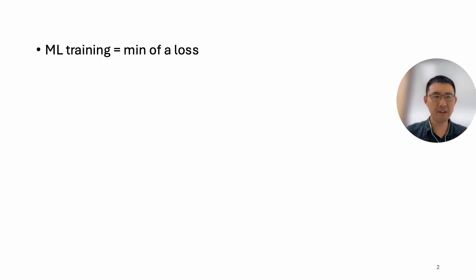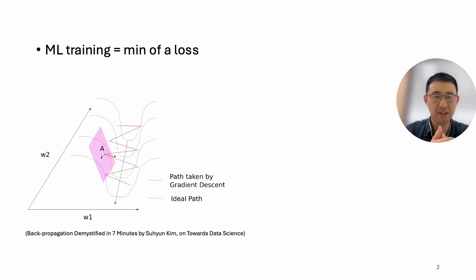Right now, the mainstream problem is solved by stochastic gradient descent or some variations of gradient descent, for example, Adam. I have been using this as the visualization to say that we don't know the landscape. Let's say these are two parameters,